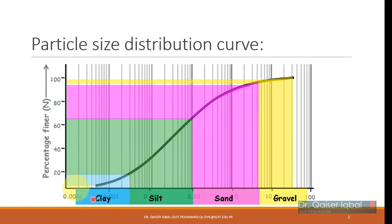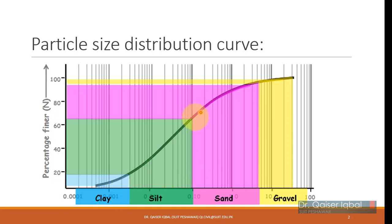That is why it is known as a semi-logarithmic plot — one axis is on log and the other is on the normal axis. Once you have plotted your particle size distribution line, the region at 4.75 mm and higher shows gravel particles. Between 4.75 mm and 0.075 mm you have sand, and smaller than that you have silt and clay. The sieve analysis portion and hydrometer analysis portion are combined into what is known as a combined gradation plot.